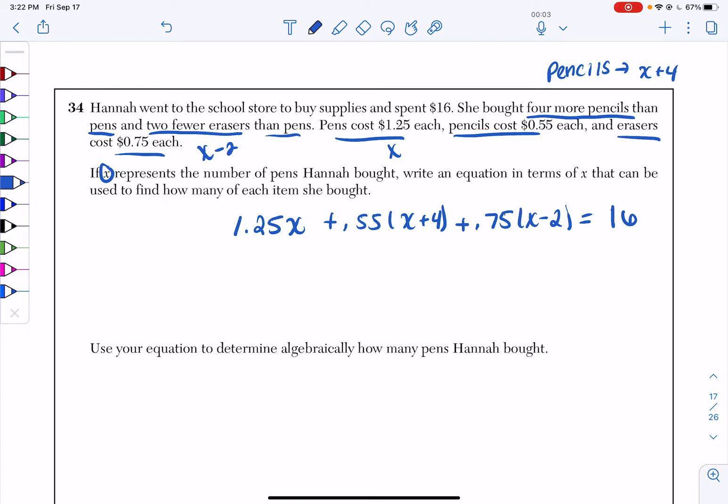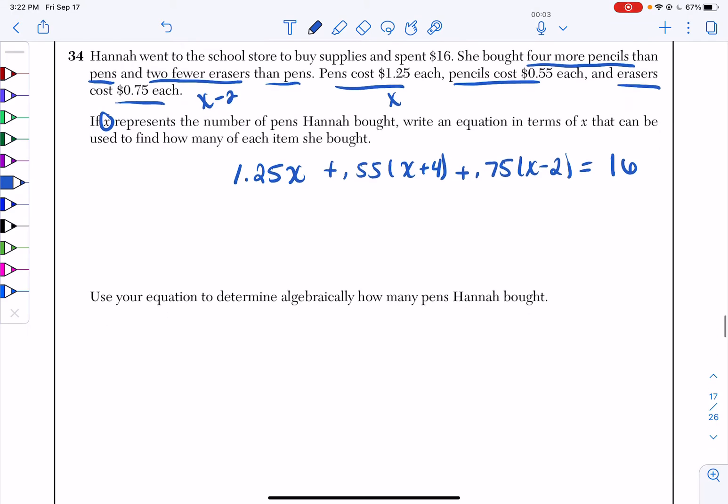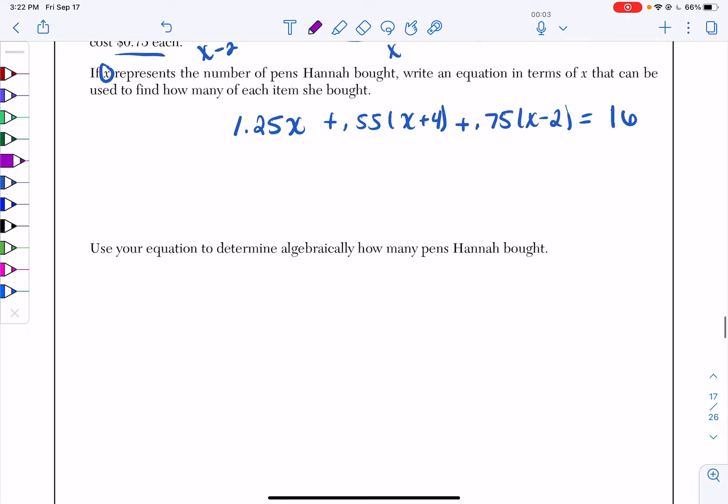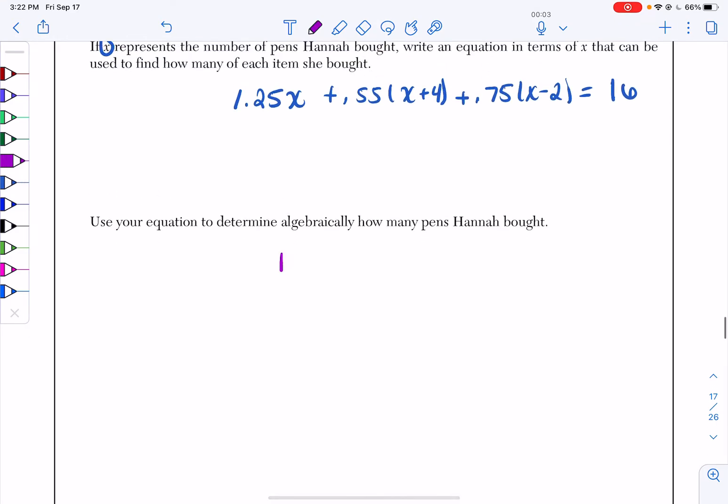Now, the question's asking, are you ready? Solve for X. It says use your equation to determine algebraically how many pens Hannah bought. So what we're going to do is solve this equation for X. I'm going to change up the color now. So I have 1.25X plus 0.55 times X plus 4 plus 0.75 times X minus 2 equals 16.